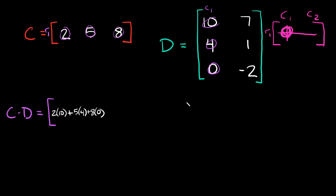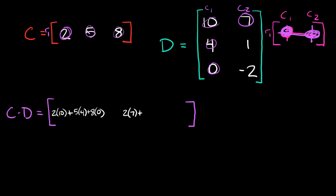Now we have to do the first row and the second column. So we're going to do two times seven, and add that to five times one, and add that to the last one, eight times negative two.